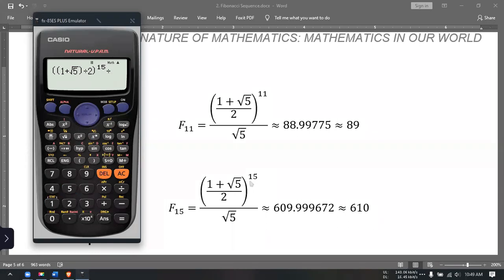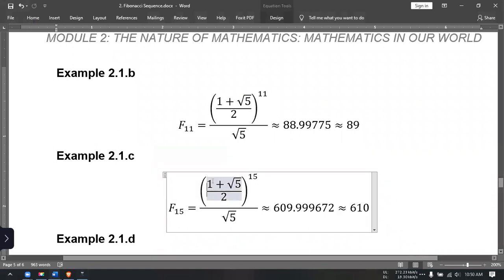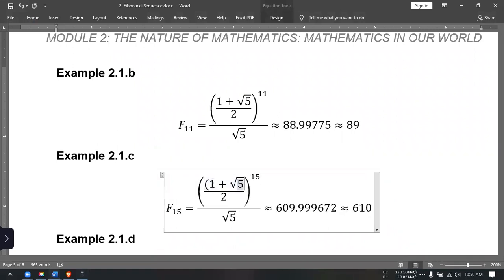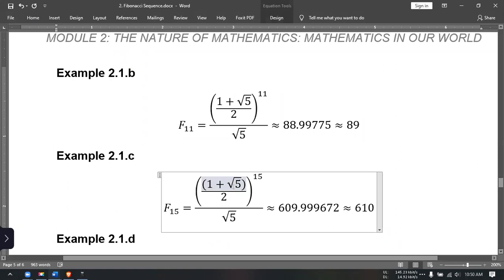Then we'll be dividing this by... Take note, we need to separate the operation so that the addition of 1 and square root of 5 happens first in our calculator.